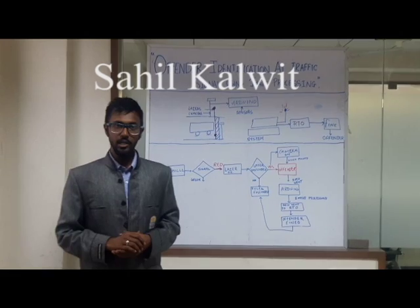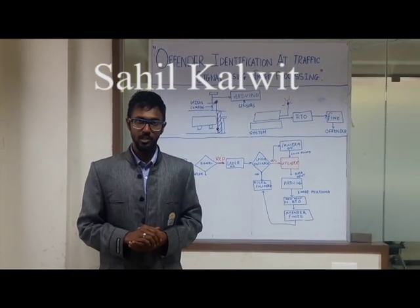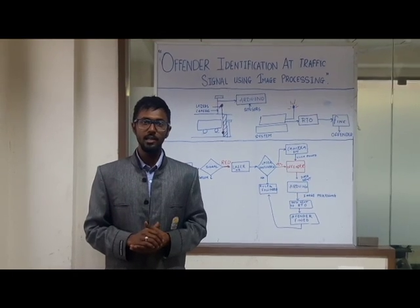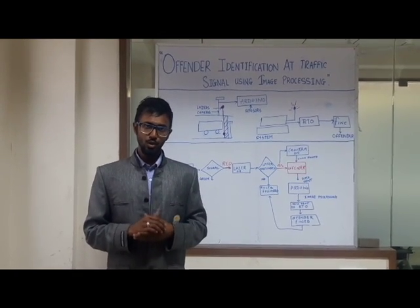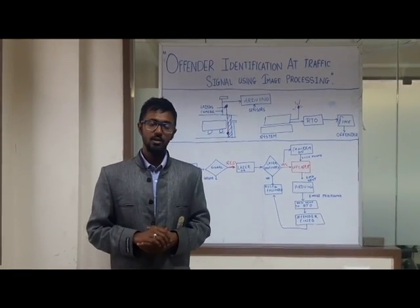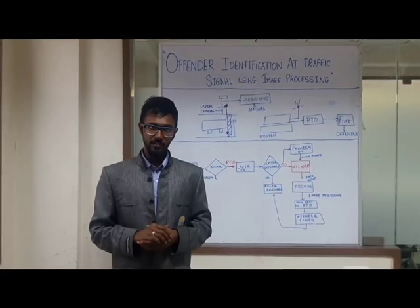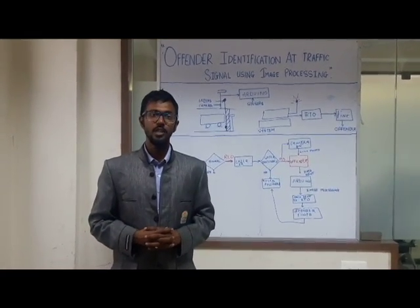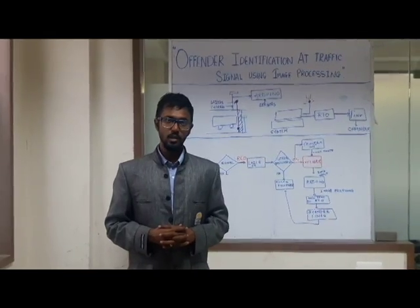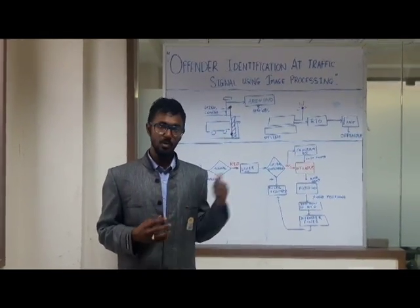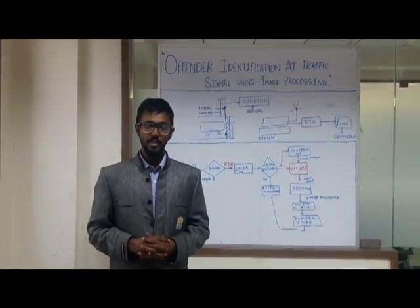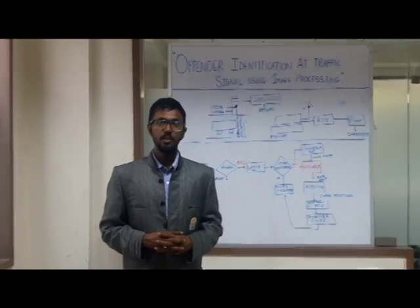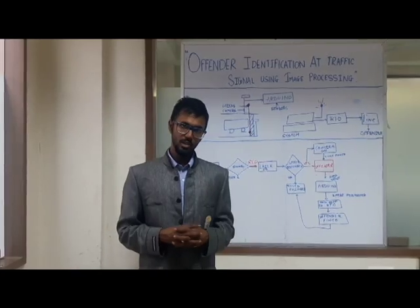I will be elaborating on the technologies used in this project. First and foremost, we have used OCR — Optical Character Recognition — for the identification of the number from the number plate of the offender. Along with this, we have used an Arduino, which is the brain behind this project, and some sensors for the identification of offenders. These are the key technologies used in this project.